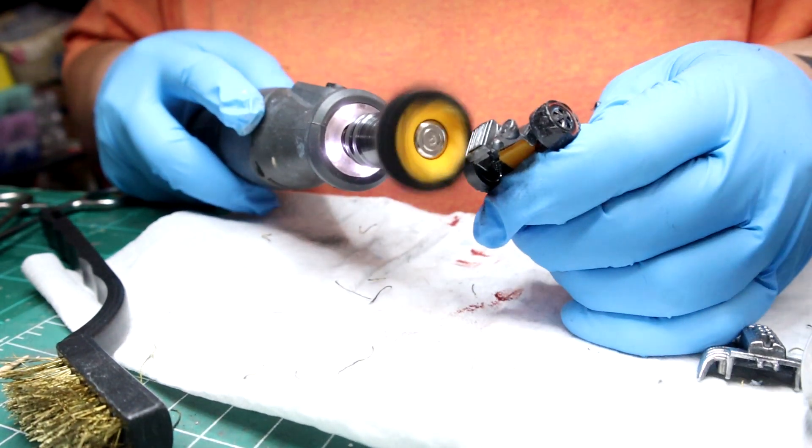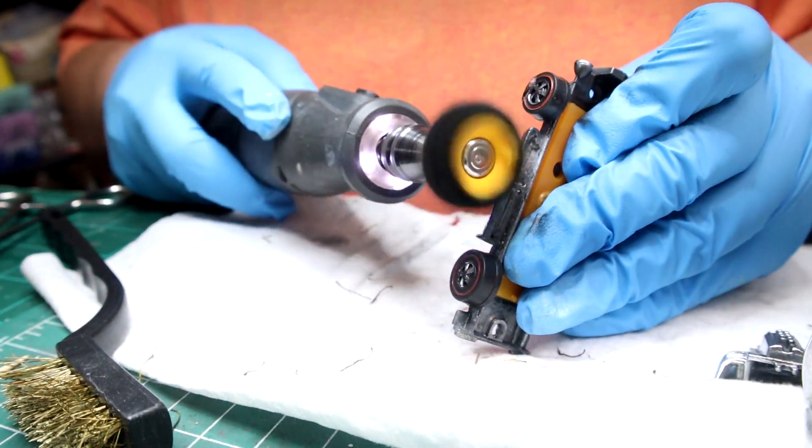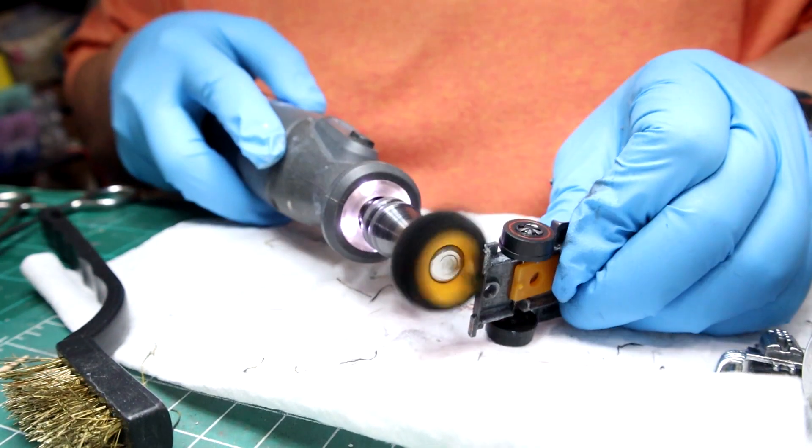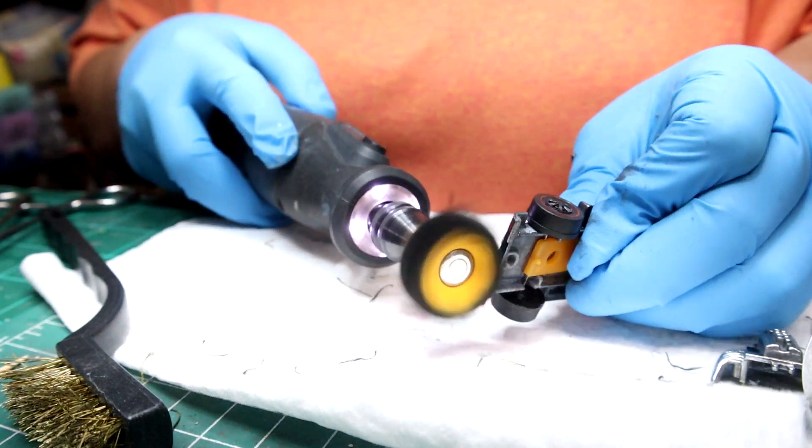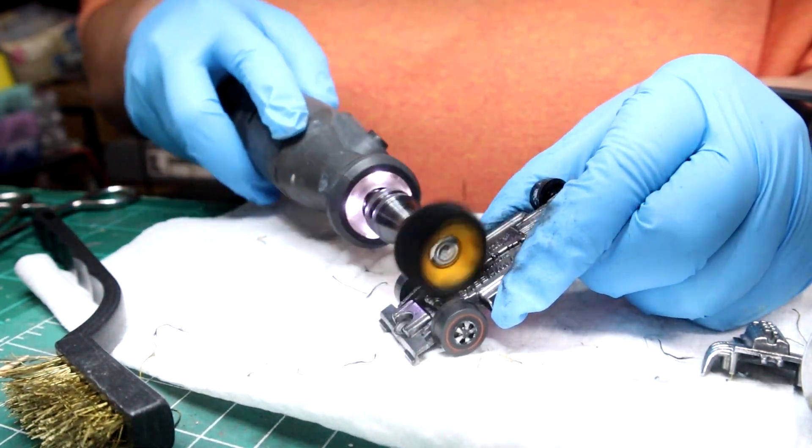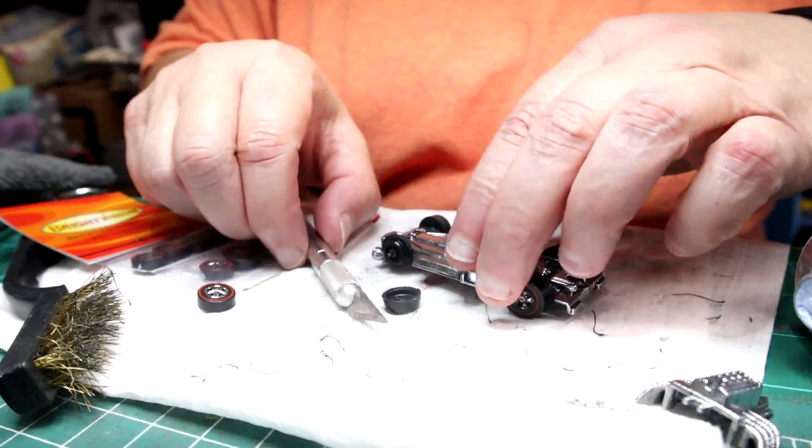But then it doesn't bother me if I leave just a little bit of black. It kind of gives it that older look. I don't want it super shiny, but I did want to get some of the tarnish off of it. This one was really play worn, if you remember what we started out with.